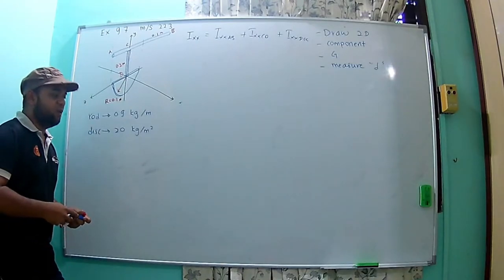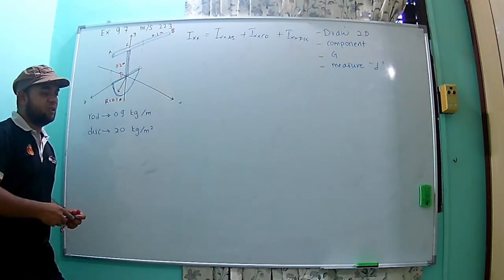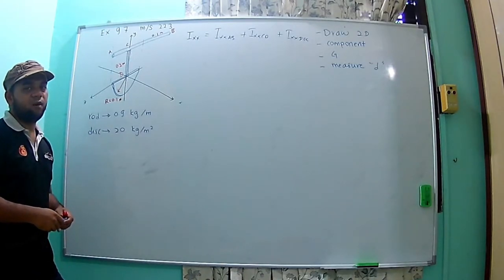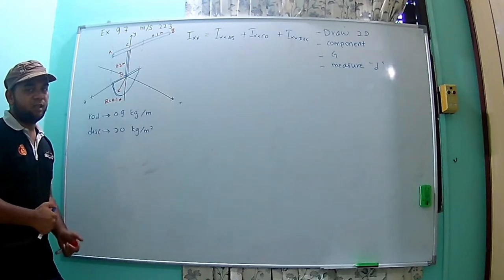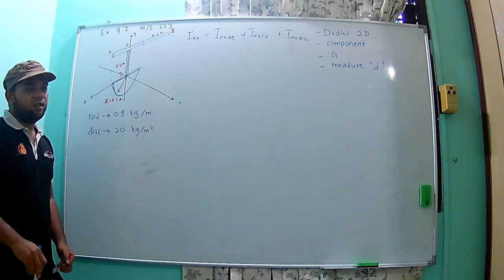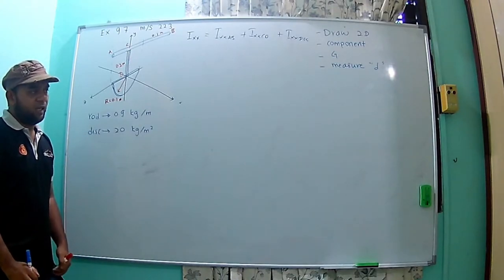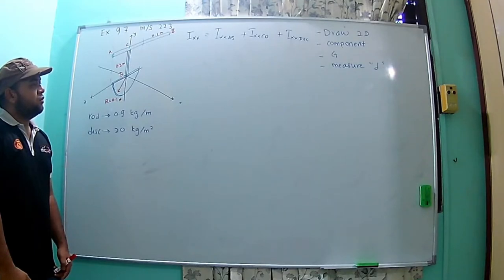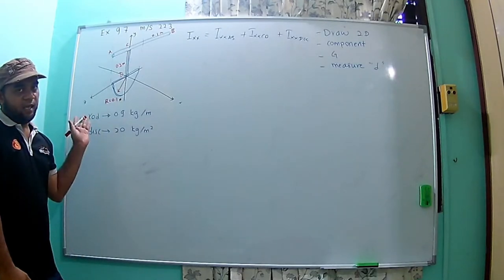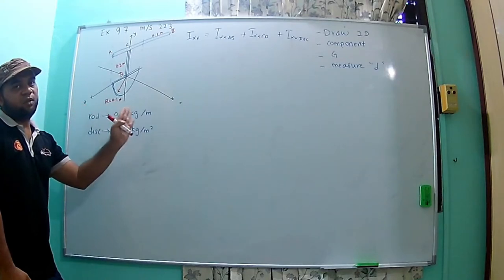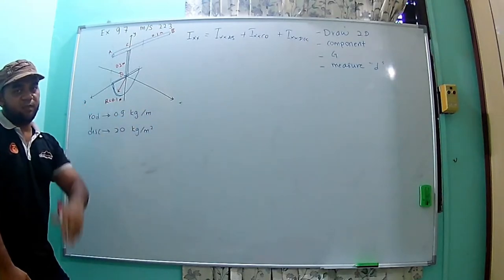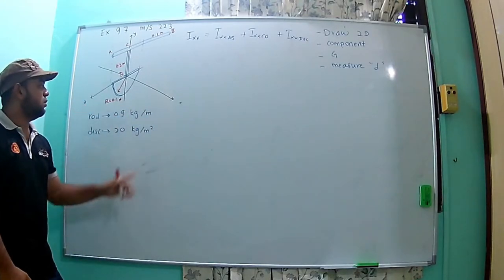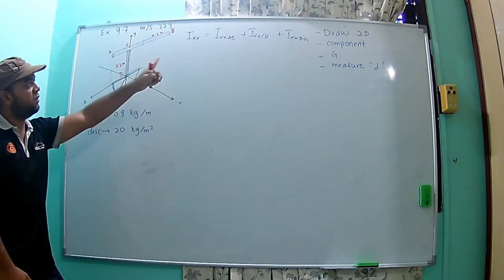We know what is the value of I — the equation we already memorized. And when you have to use the parallel axis equation, I_AA equal to I_DG plus M·D², you have to know the mass of each component.